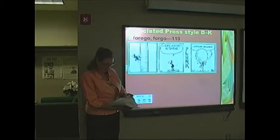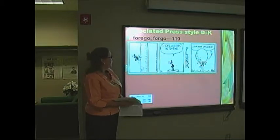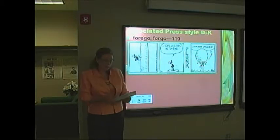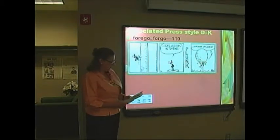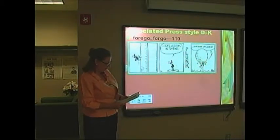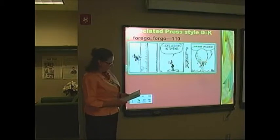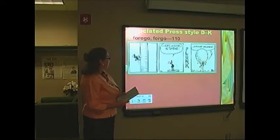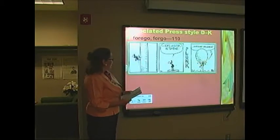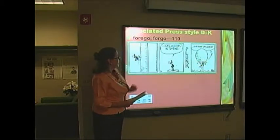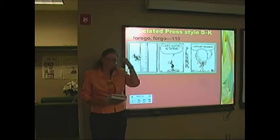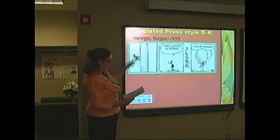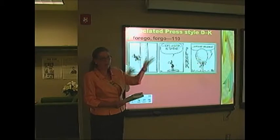Forgo and forego are on page 110, left-hand column, in the middle — both pronounced exactly alike. When you eliminate the E, as in forgo, that means to abstain from something. And forego means to go before. A cartoon says four — F-O-R-E — because there is another fore for those who blink off. Four o'clock, it's tea time — he's on top of a golf tee and says, gotta get spell check.